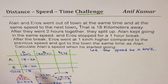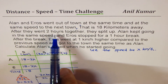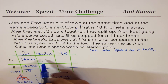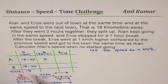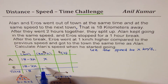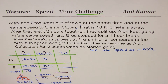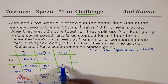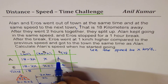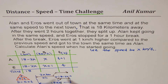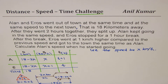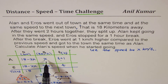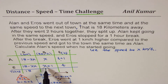After two hours they split: Ellen kept going at the same speed x. Eros actually stopped but then started with one kilometer per hour extra speed, so the speed of Eros will be x plus 1. If Eros took t hours to cover the remaining distance, then Ellen took t plus 1 hours — that rest time is included in Ellen's time. So Ellen goes at speed x for t plus 1 hours, and Eros goes at speed x plus 1 for t hours.